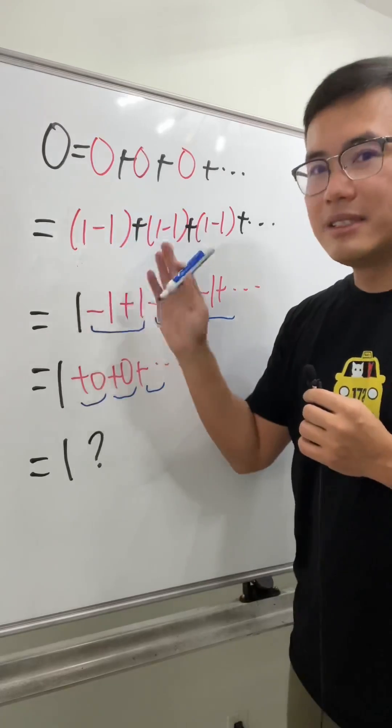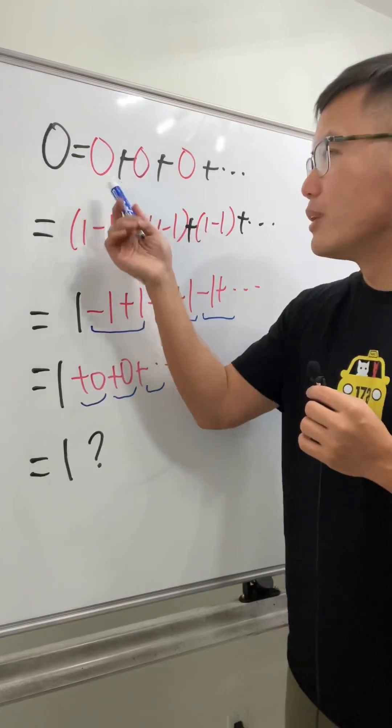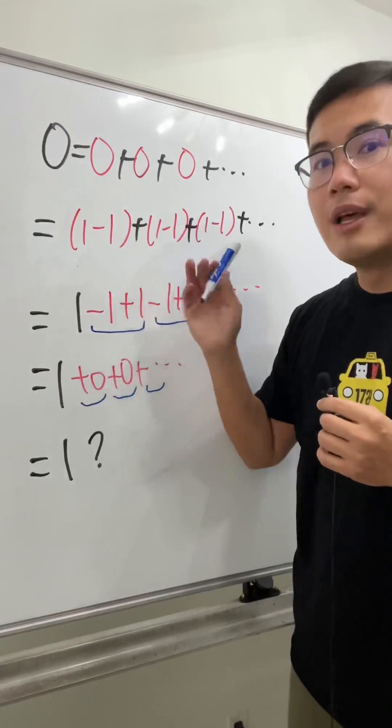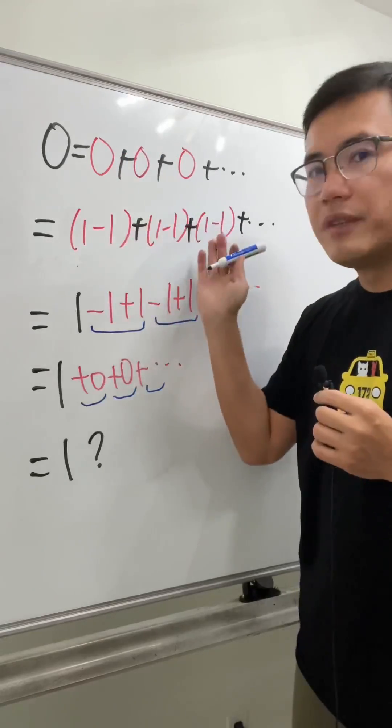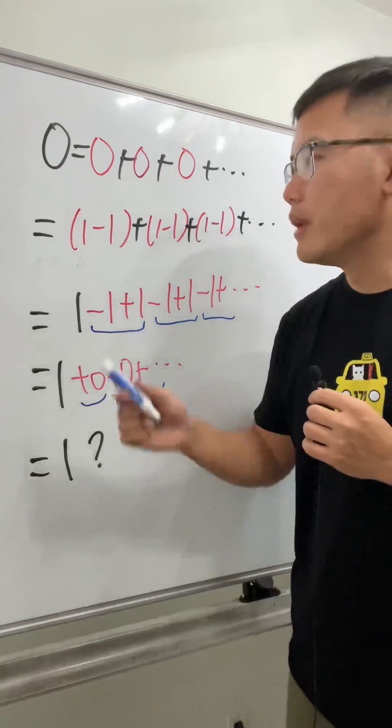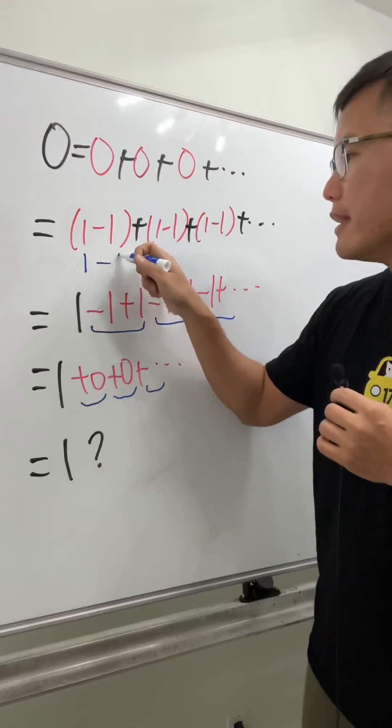However, the next line is not okay. Even though each zero is equal to one minus one, when we have infinitely many of these, it's no longer true. If you look at this, we have one minus one plus one, one minus one plus one minus one...